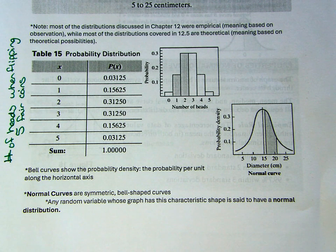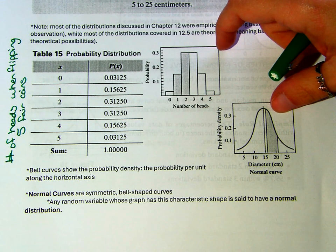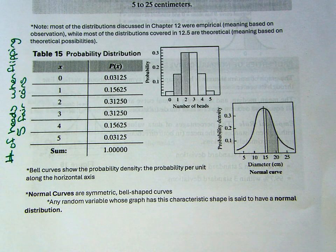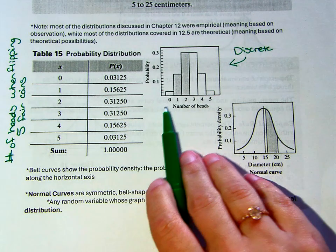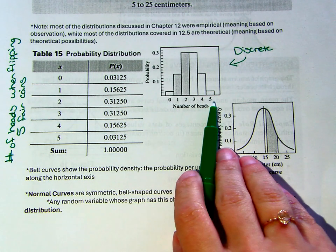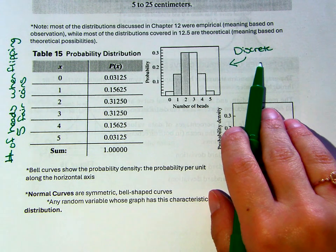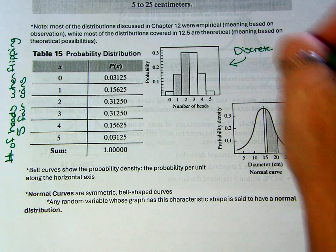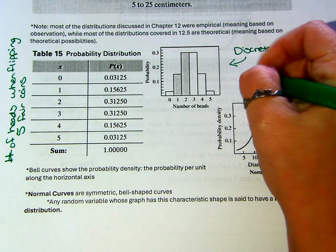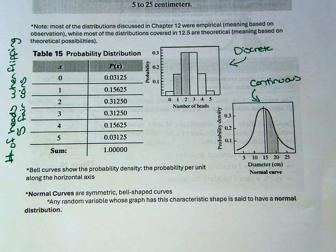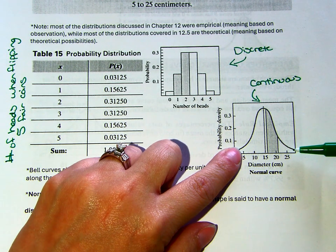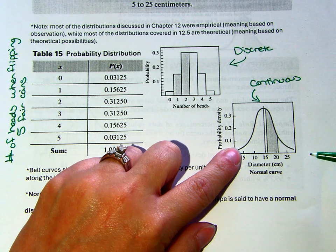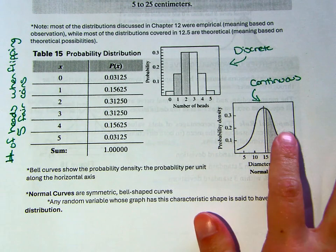These two graphs show the difference between discrete and continuous random variables. Discrete random variables only have a few options — with coin tosses, you can have zero to five heads, so the graph looks like a bar chart. But when you have a continuous random variable, you'll have a bell curve shape because you have a whole range, like the diameter of camellia blossoms going from 5 to 25 centimeters. These bell curves are what we'll be working with more today.